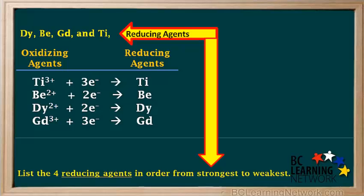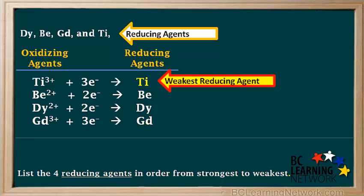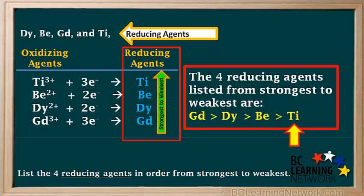In a different question, you may be asked to list the reducing agents in order from strongest to weakest. The strongest reducing agent is the lowest on the right side of the table — in this case, GD metal. The weakest reducing agent is at the top right, which is Ti metal. So the reducing agents listed from strongest to weakest are: GD > DY > BE > Ti.